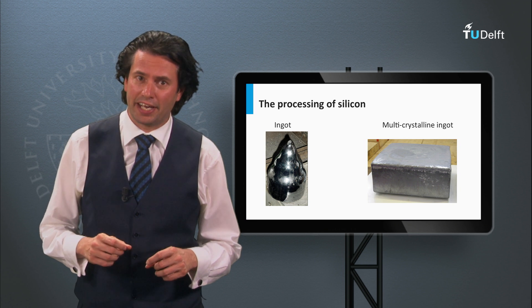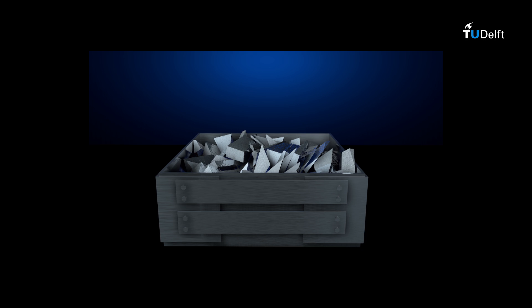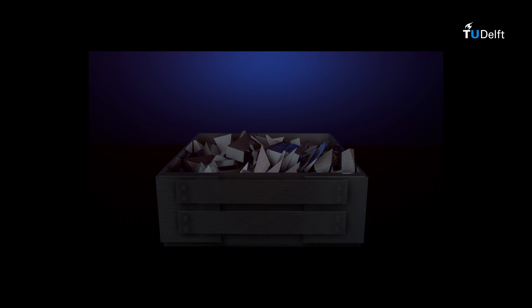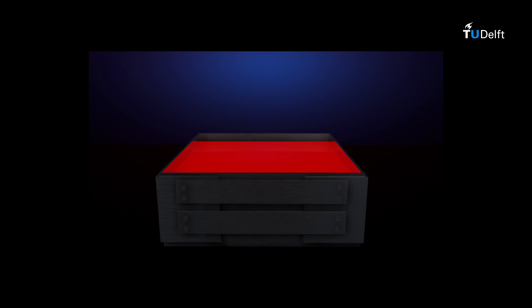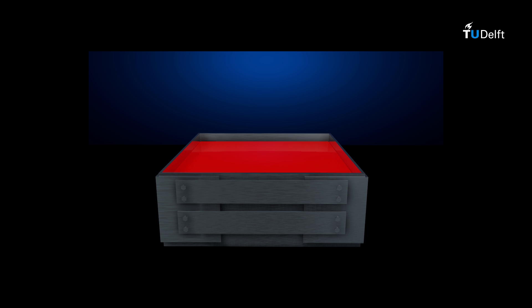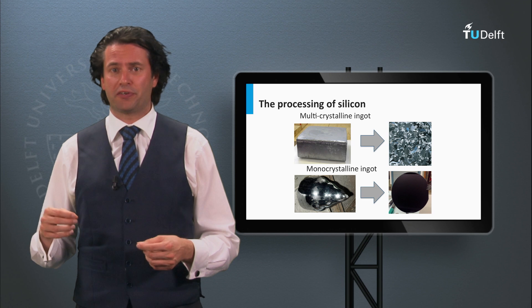Next to monocrystalline silicon ingots, multicrystalline silicon ingots can be produced as well. Multicrystalline and polycrystalline silicon consist of many small crystalline grains. This is made by melting highly purified silicon in a dedicated crucible and pouring the molten silicon into a cubic shaped growth crucible, where it solidifies into multicrystalline ingots. This process is called silicon casting; if the melting and solidification occur in the same crucible, it is referred to as directional solidification. The cross-section of a multicrystalline ingot can go up to 70 by 70 cm, with a typical height of 25 cm.